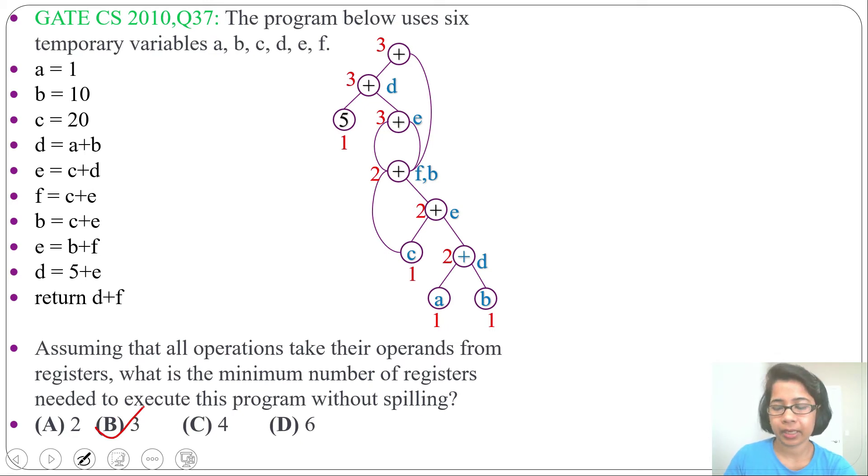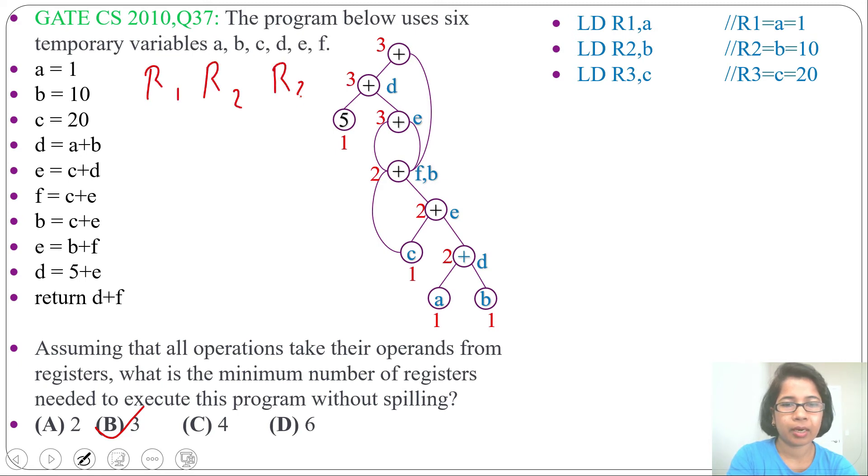Another method, you can write the machine instruction. Like for A, you can load into R1. B, you can load into R2. C, you can load into R3. Let me also maintain register descriptor for this. R1, R2, R3. R1 contains A. R2 contains B. R3 contains C. Next we will do this addition. A is in R1. B is in R2. And after this, A don't have any use. Or we can say it is not live. So you can use R1. Add R1, R1, R2. Now R1 will contain D. It will add R1, R2 and result will be in R1.